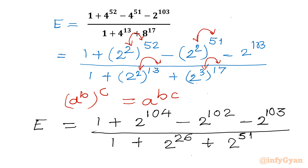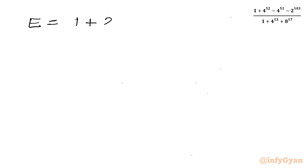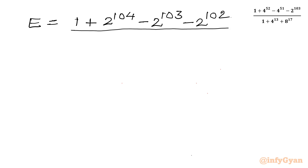Now we have to simplify this. Let me write our numerator and denominator. E equals 1 plus 2 power 104 minus 2 power 103 minus 2 power 102, divided by 1 plus 2 raised to the power 26 plus 2 raised to the power 51.